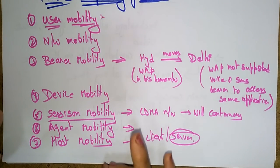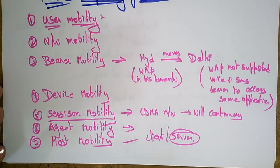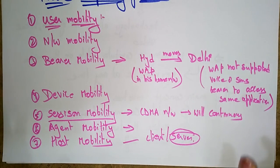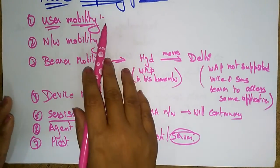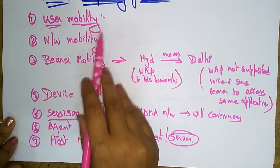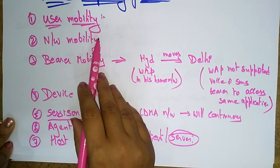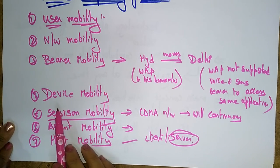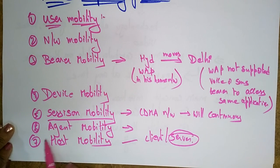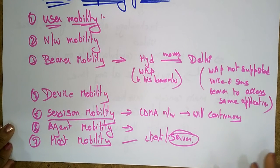So these are the different functions of mobile computing. Mobile computing has the following functions: user mobility, network mobility, bearer mobility, device mobility, session mobility, agent mobility, and host mobility. Thank you.